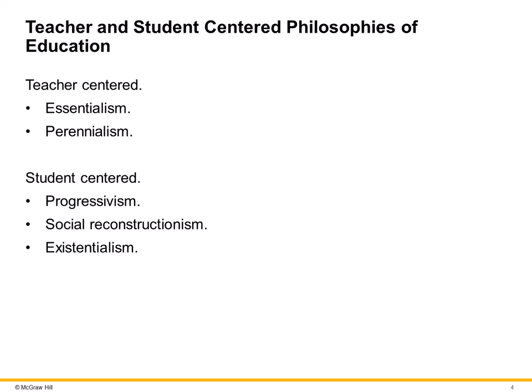We can place them on a continuum from teacher-centered to student-centered. Essentialism and perennialism are teacher-centered, while progressivism, social reconstructionism, and existentialism are student-centered.